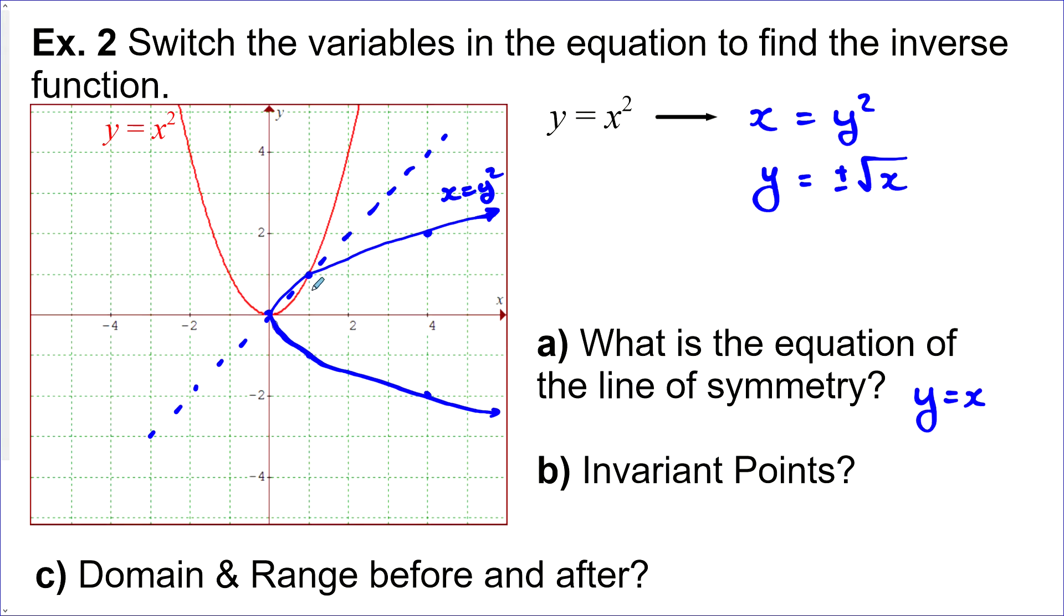This point is invariant. And this point, say this point, negative two, four, that got reflected all the way down to here, four, negative two.